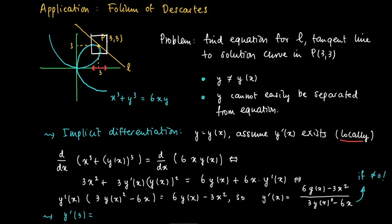So by substituting the value, the relevant value x equals 3, we get that the derivative in that point equals 6 times 3 minus 3 times 9 divided by 3 times 9 minus 6 times 3. So we get minus 1.